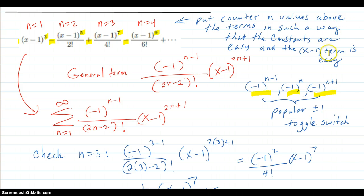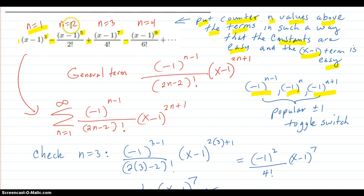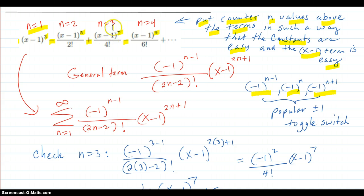For the general term, we use this trick: put counter n values above the terms so that the constants are easy and the x minus 1 term power is easy. I chose n going 1, 2, 3, 4. I want the first term at n equals 1 to be positive, so I need negative 1 to the power of n minus 1, giving exponent 0 and a positive result. For the denominator, look at the factorial: for n equals 3 that's 2n minus 2 — so 2 times 3 is 6, minus 2 is 4 factorial. You know it's skipping by a factor of 2 — so it's a 2n mechanism with a minus 2 adjustment.